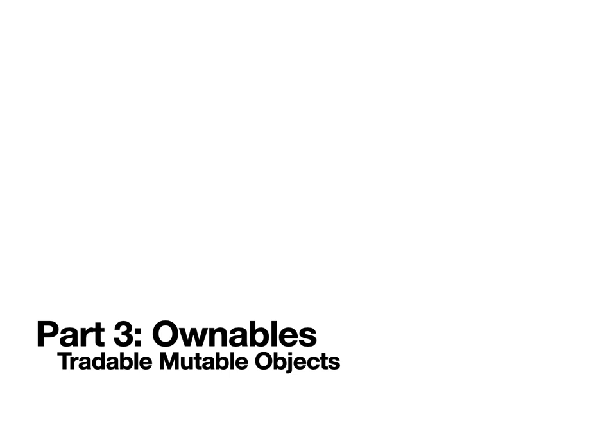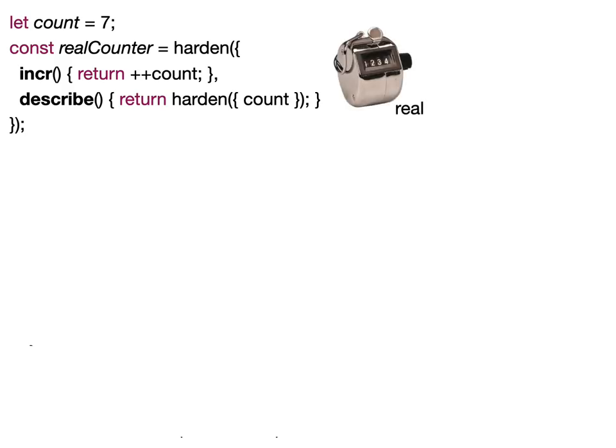Ownables is the way we return to the two-phase cycle. A nice, simple example of a mutable object in which the value changes with use would be a counter that can only count up. Maybe this counter is like an odometer, where the higher the number, the less valuable it is.